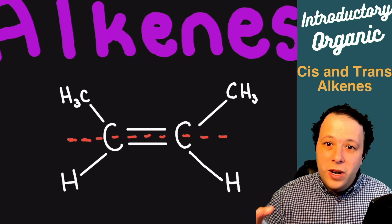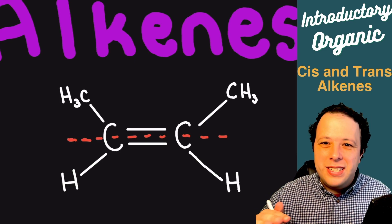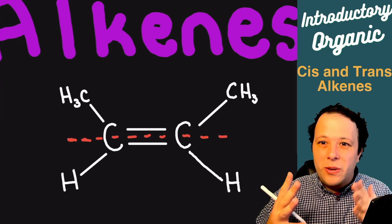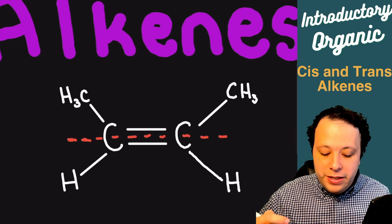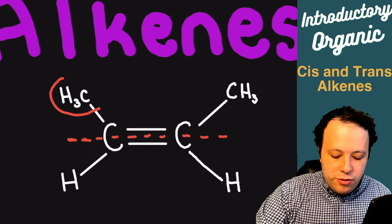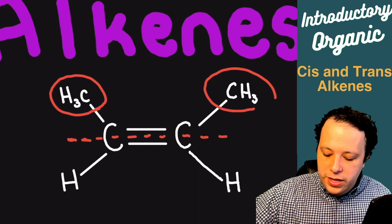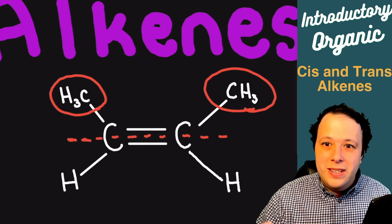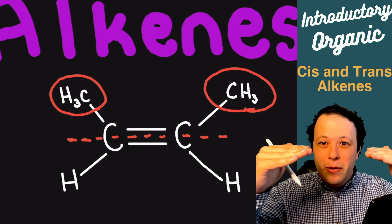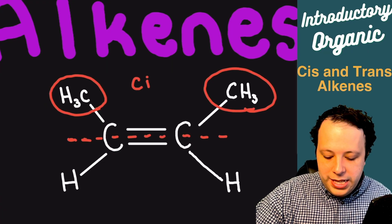Now what you need to do to determine if they're cis or trans is look to see if there are different groups on each side of the double bond. For example, if I look at the CH3s here, we see that both of these are on the same side. Whenever we have them both on the upper or both on the lower together, this is referred to as cis.